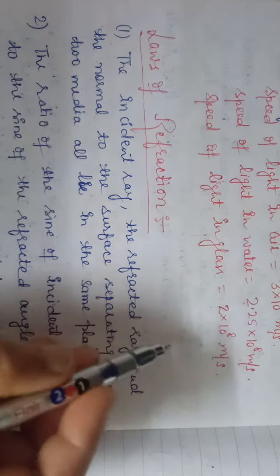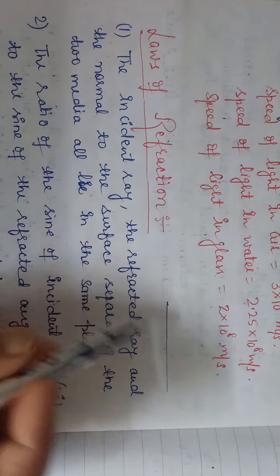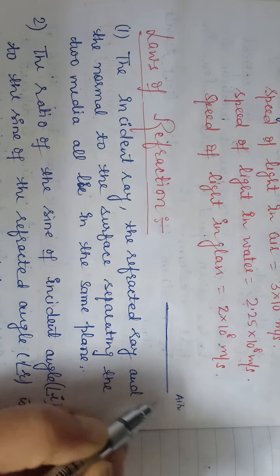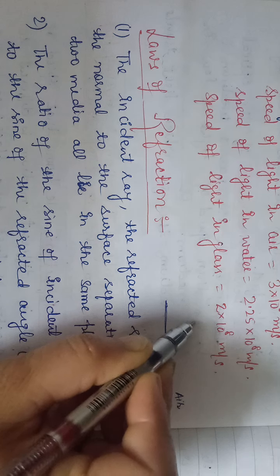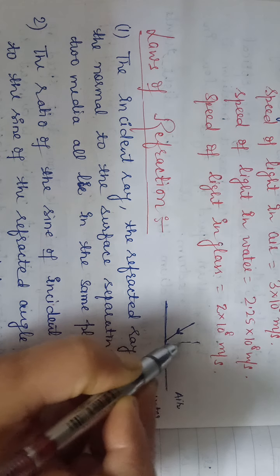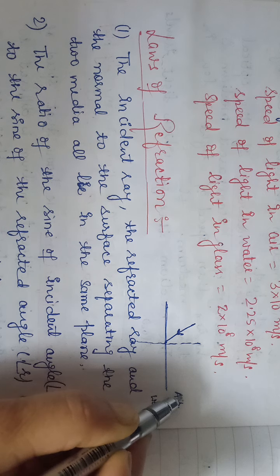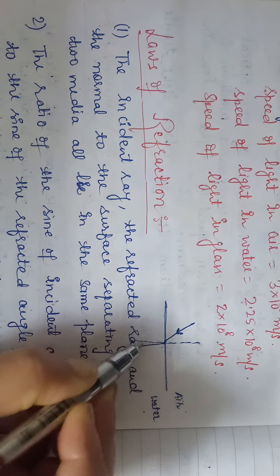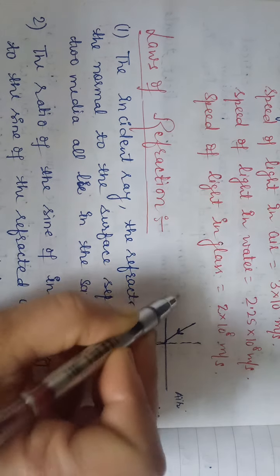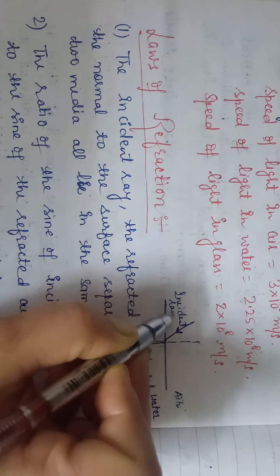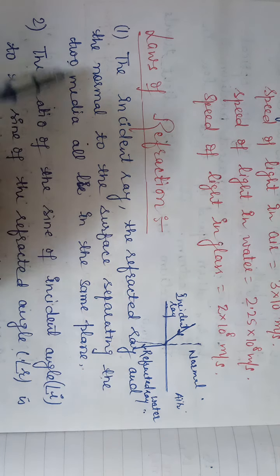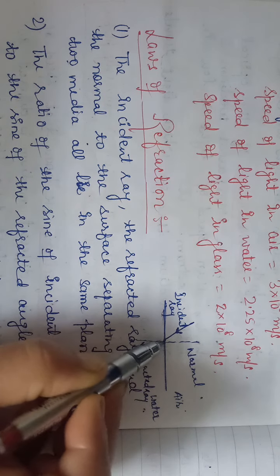in the same plane. It means if we have an incident ray, and this line — the interface separating the two media — suppose here it is air and it is water, then this ray is the incident ray and this is the normal. As the ray goes from a rarer to a denser medium, it bends towards the normal. This is the refracted ray, and this is the normal to the surface separating the two media — all lie in the same plane.